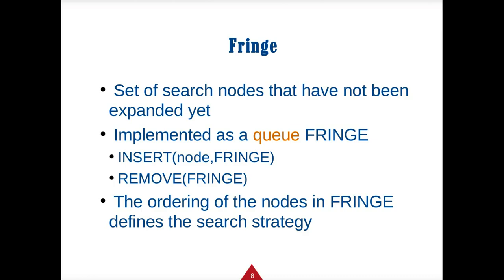A new term to introduce is the fringe — a set of nodes that have not been expanded yet. We know these nodes exist but haven't gone past them. We store nodes as a queue. The different blind search algorithms differ mainly in how we build that queue. The fringe has two functions: insert, where you give the node and its associated fringe; and remove, where you take a fringe element off the queue. The ordering of the fringe nodes defines the search strategy.